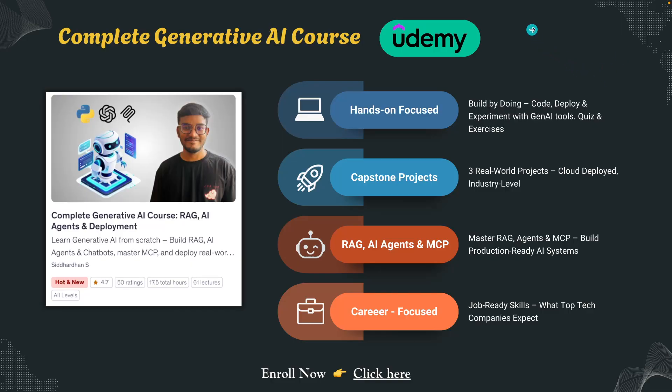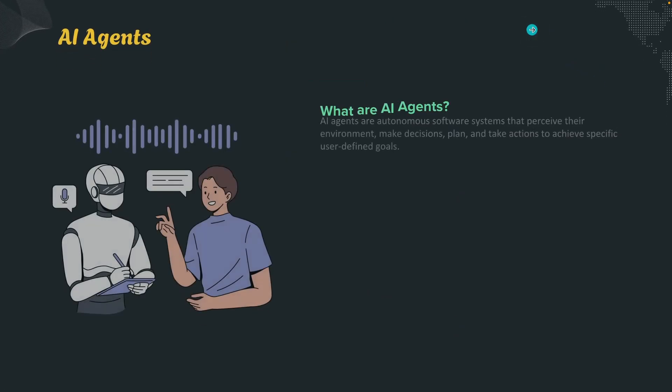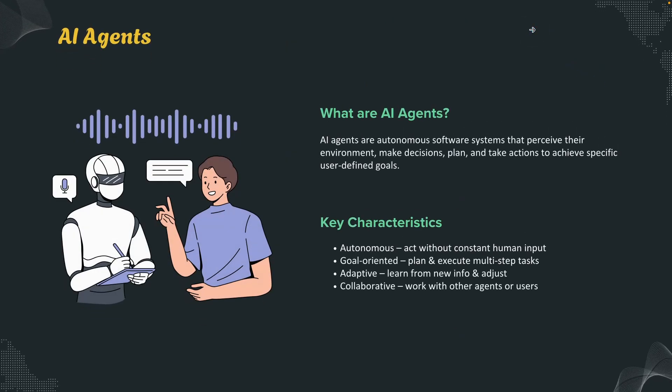Alright, let's get started with AI agents. Think of an AI agent as an intelligent digital assistant that can perceive, think, decide and act all by itself without any human intervention.